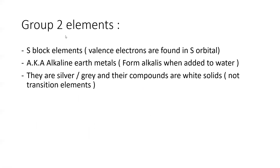Group 2 elements are called S-block elements because their valence electrons are found in the S orbital, and they're on the left-hand side of the periodic table. They're also known as alkaline earth metals because they form alkalis when added to water, meaning they form OH⁻ ions or hydroxide ions. They are silver or grayish, and their compounds are white solids — not transition elements, so they will not form colored compounds.